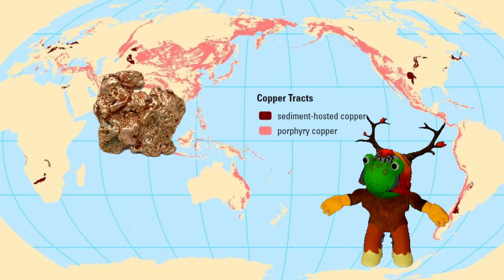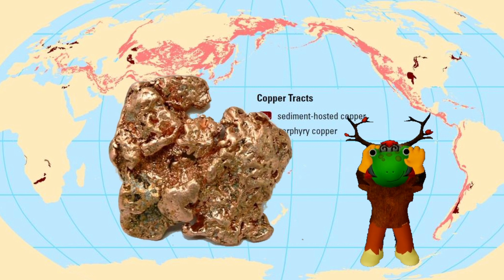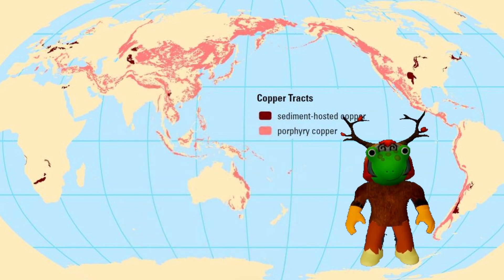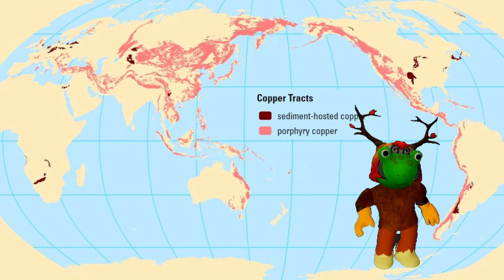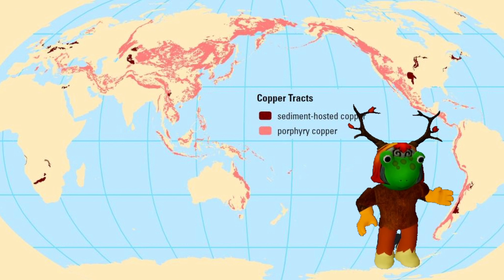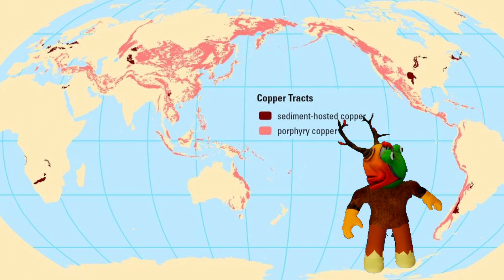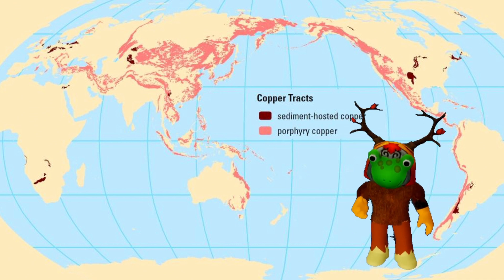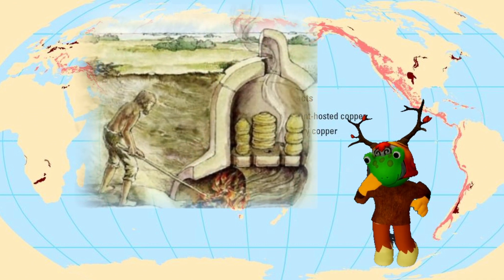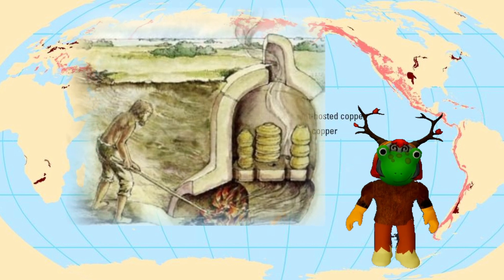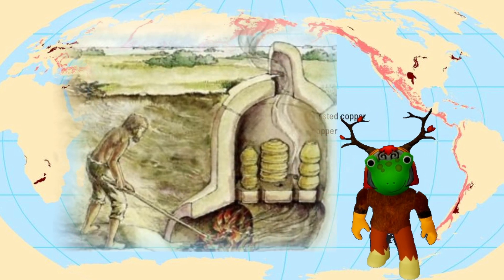Copper is another metal that can be found in native forms, but most copper is chemically bounded in ores. Innovations of the Neolithic revolution were helpful at this time. People in the region between Anatolia and Mesopotamia began to settle. The discovery that clay can be hardened by burning led to the art of ceramics.